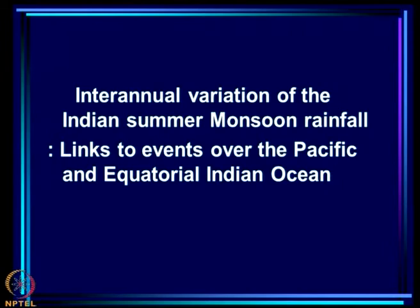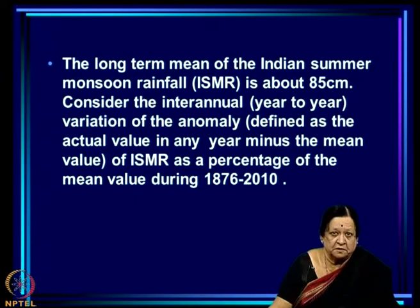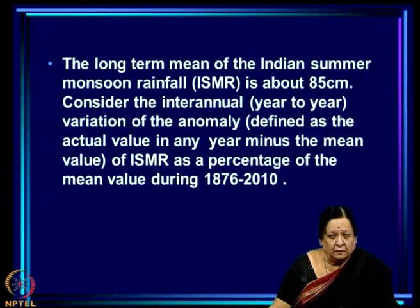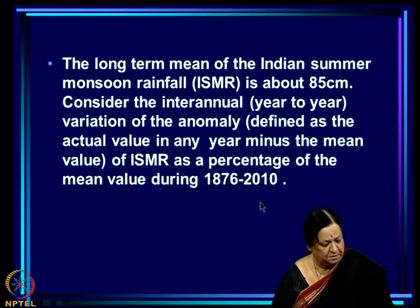Today, I am going to talk about the year to year or the inter-annual variation of the Indian summer monsoon rainfall. In particular, I will focus on links of this variation to events over the Pacific and equatorial Indian Ocean. We know that the Indian summer monsoon rainfall, or ISMR, has a long-term average of about 85 centimeters, and the inter-annual variation — the standard deviation — is about 10 percent of this average.